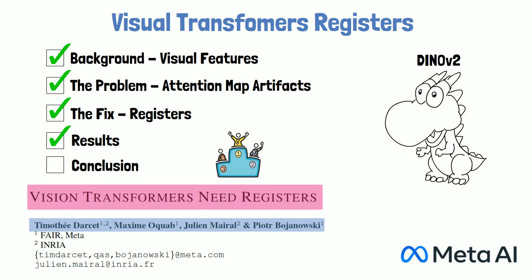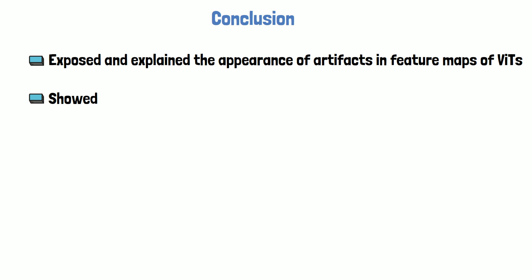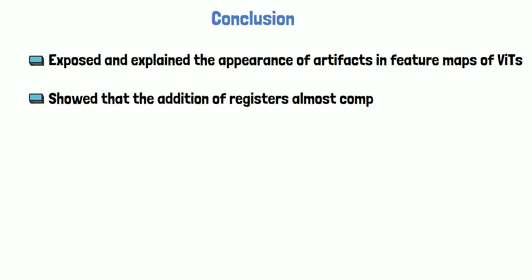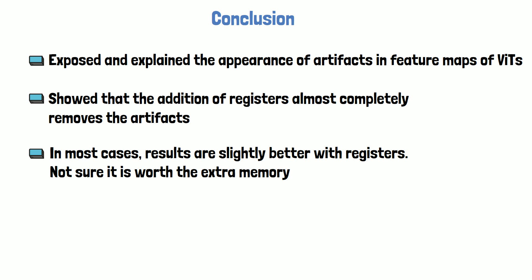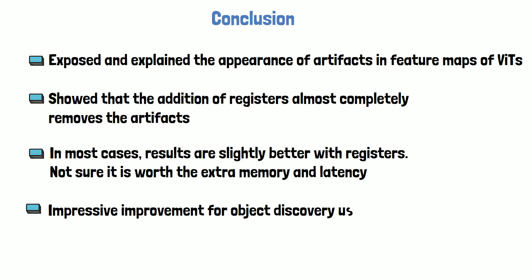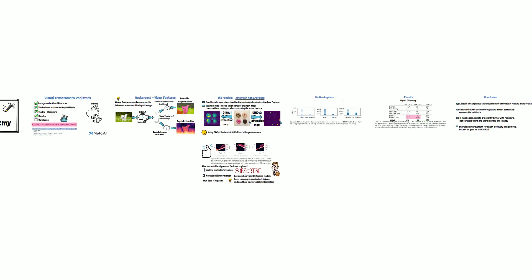Now let's wrap up with conclusions. First, the paper exposed and explained the phenomenon of unimportant input tokens being used by the model to save global information — very interesting by itself. Second, the addition of registers almost completely removed the artifacts. Third, in practice for classification, segmentation, and depth, results are only slightly better with registers, yet we pay for the added tokens with memory and latency, so it is not surely worth it in all cases. Lastly, there is impressive improvement for object discovery when using DINOv2 with registers — however, it is still not as good as results with DINOv1. Thank you for watching.